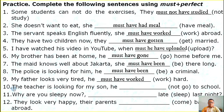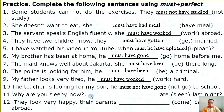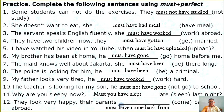Number ten: The teacher is looking for my son. He must not have gone to school. Number eleven: Why are you sleeping now? Must you have slept late last night? Number twelve: They look very happy. Their parents must have come back from abroad.